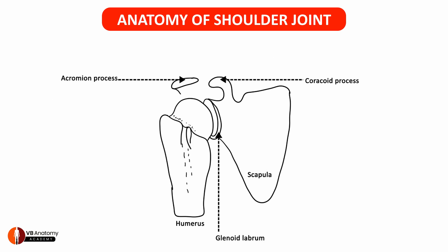Acromion process — that completes the bones required to draw this diagram. Let's colour the bones quickly: the scapula, the humerus, the acromion, the articular surface of humerus and the glenoid cavity. The glenoid labrum should be a little darker, just to indicate that it is a different type of cartilage.